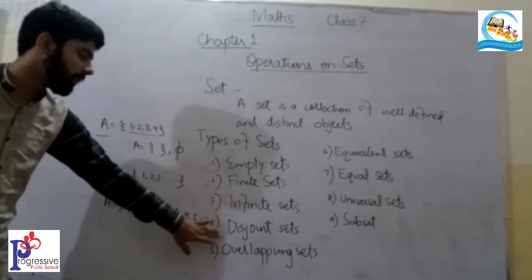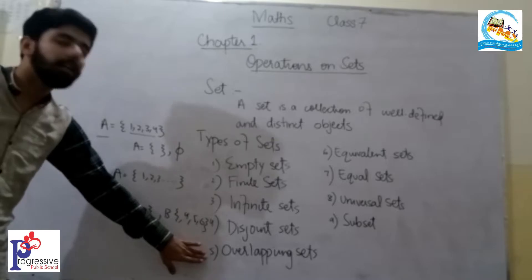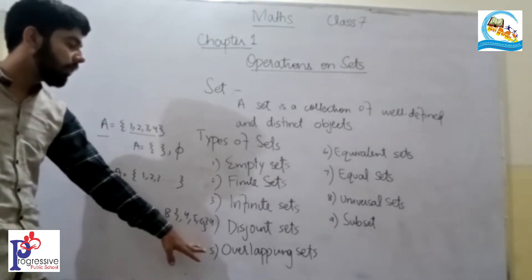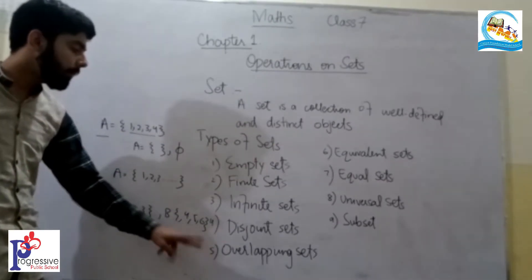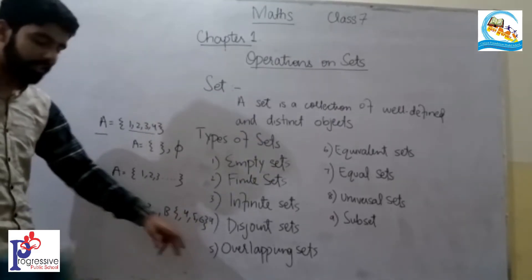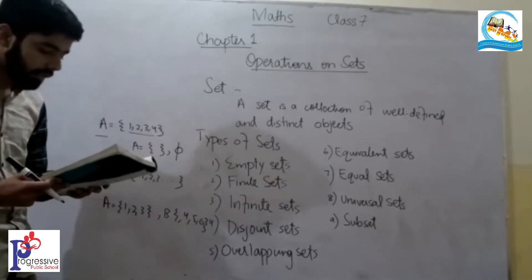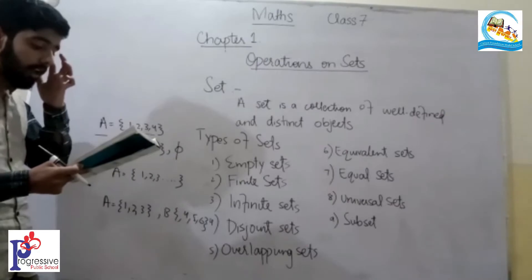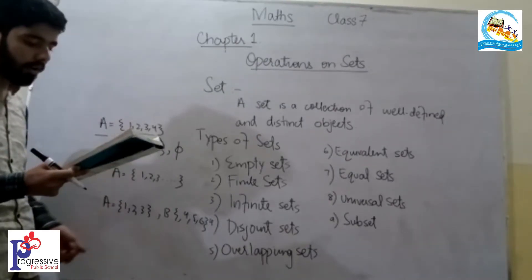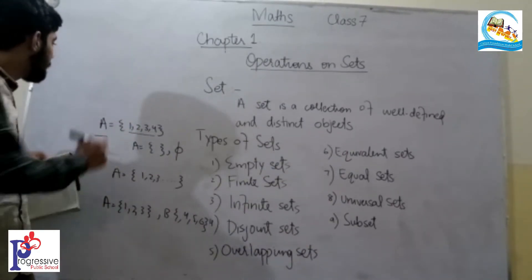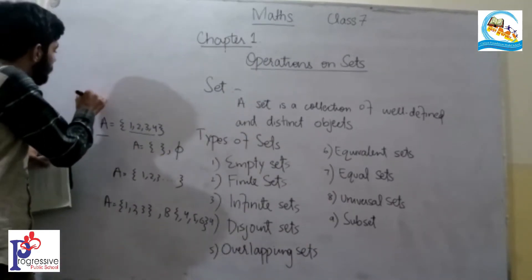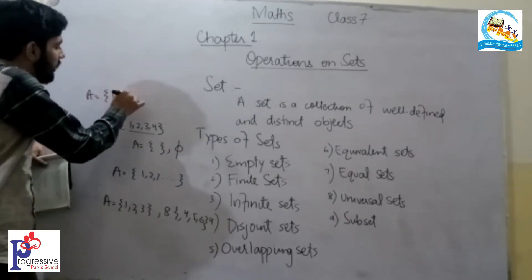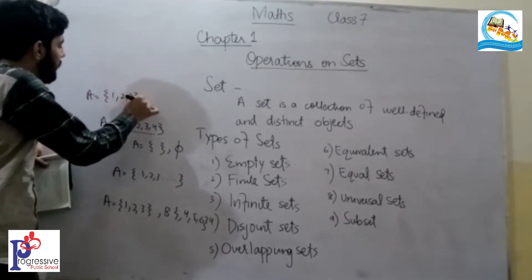Overlapping set: two sets having at least two same common values are called overlapping sets. Next is equivalent set. An equivalent set has an equal number of elements. For example, there are two sets A and B.